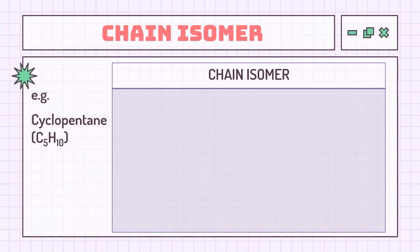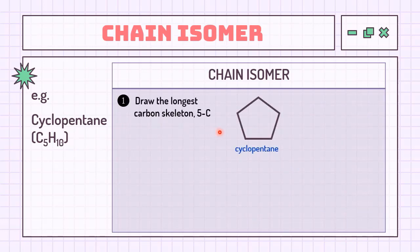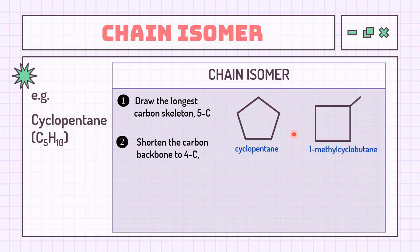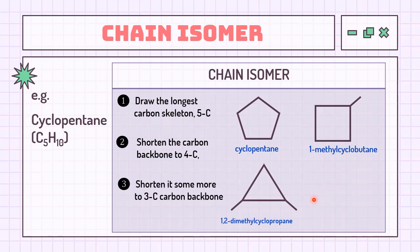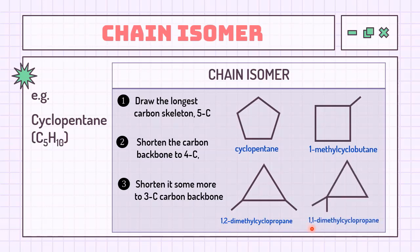For the cyclic structure of cyclopentane, start by drawing cyclopentane, a 5-carbon ring. Shorten it to cyclobutane, a 4-carbon ring with 1 branch. Then shorten further to cyclopropane, a 3-carbon ring with 2 branches. When there are 2 branches, you can have more than one isomer — instead of only 1,2-dimethylcyclopropane, you can also have 1,1-dimethylcyclopropane.